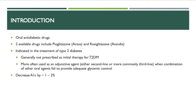TZDs are oral anti-diabetic medications. There are two medications currently available in this class: pioglitazone, brand name Actos, and rosiglitazone, brand name Avandia. They're indicated in the treatment of type 2 diabetes. They're generally not used as initial therapy or monotherapy, but more as an adjunct agent — either second line or more commonly third line — in combination with other diabetic medications when adequate glycemic control fails. They decrease A1C by about 1 to 2%.